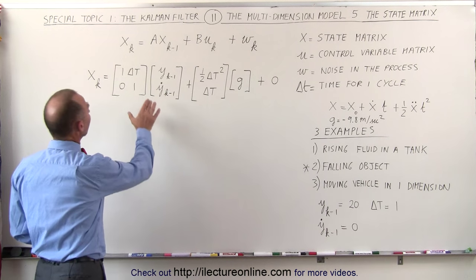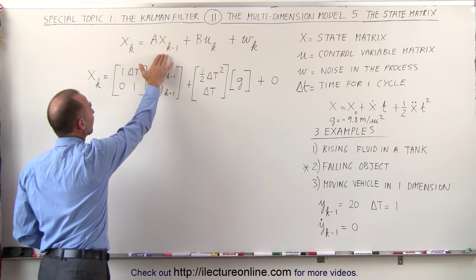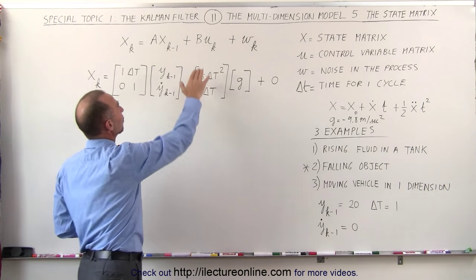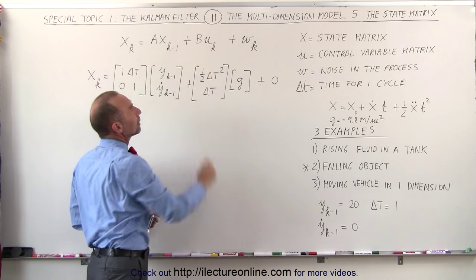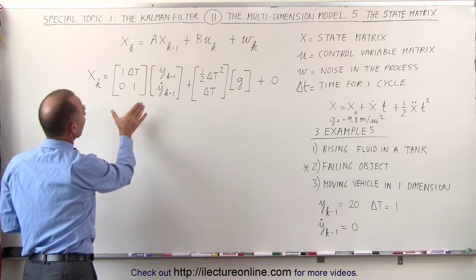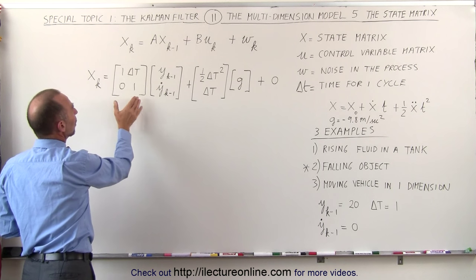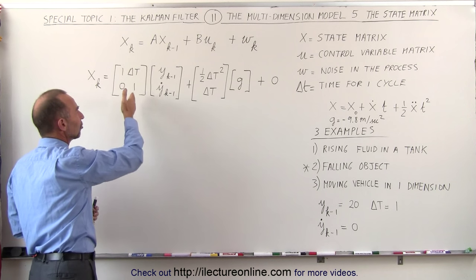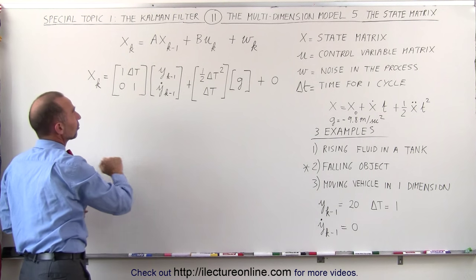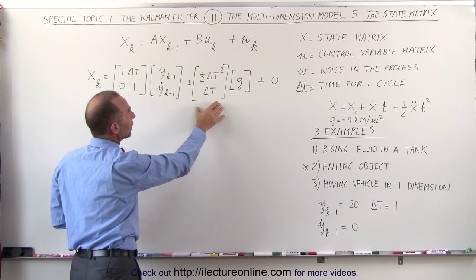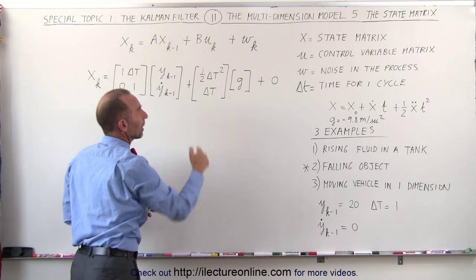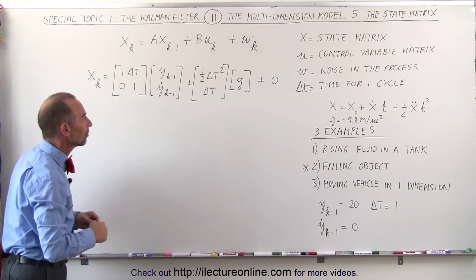First we need to multiply the A matrix times the previous state matrix, and we have to multiply the B matrix times what we call the control variable matrix. Here's what that looks like in a one-dimensional problem where we have position and velocity in the y direction. This is what the A matrix looks like, and if we're dealing with something that could have acceleration in one dimension, that's what the B matrix looks like, just like we saw in the previous example.